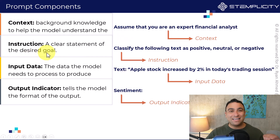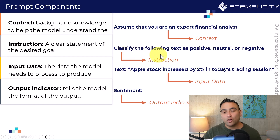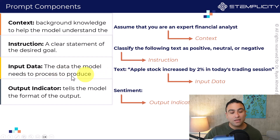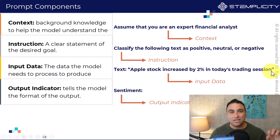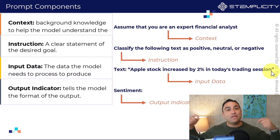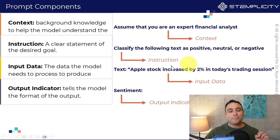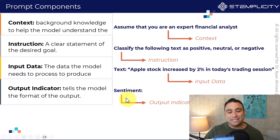Next, we set clear instructions — a clear statement of the desired goal. For example: 'classify the following text as positive, neutral, or negative.' That is clear instruction of exactly what I'm asking the AI model to do. Then we add input data — the data the model needs to process to produce an output. For example: 'Apple stock increased by 2% in today's trading session.' Finally, the fourth component is an output indicator, which tells the model the format of the output. I can say 'sentiment:' and that will be the format the model uses.